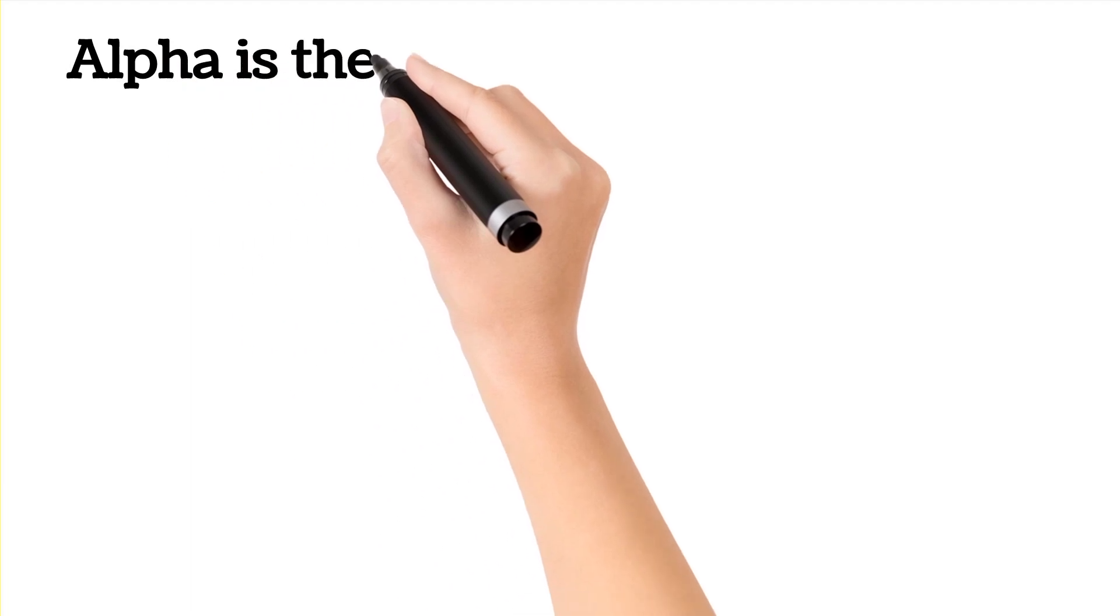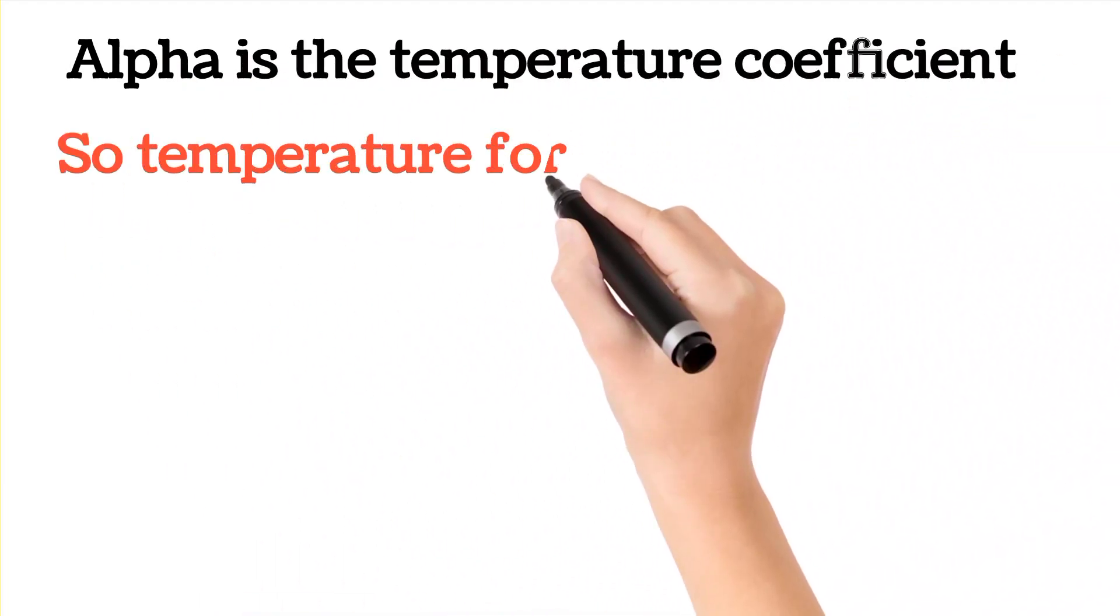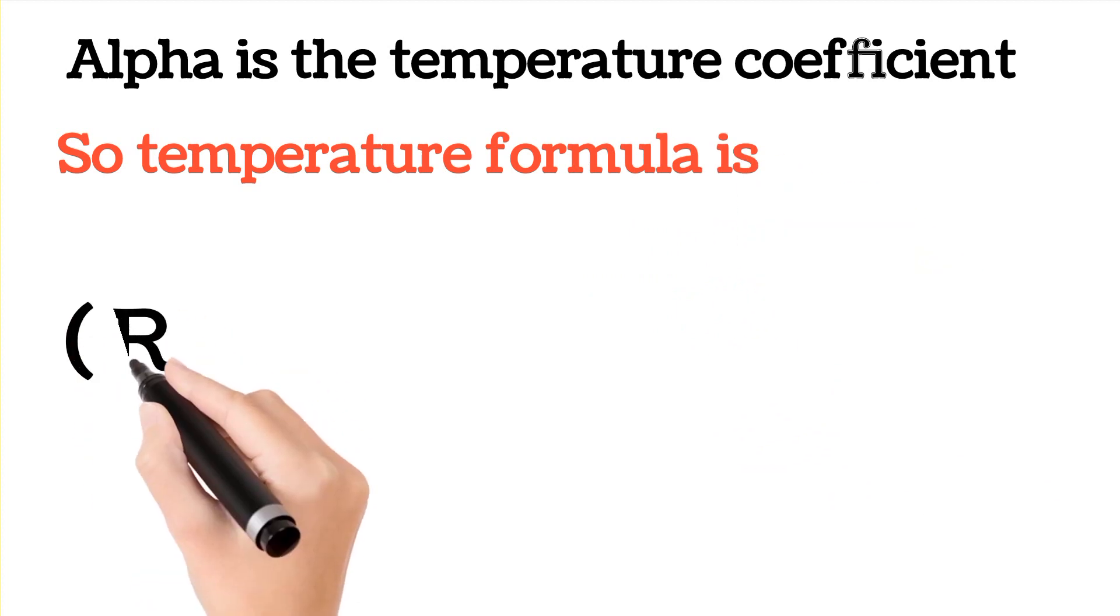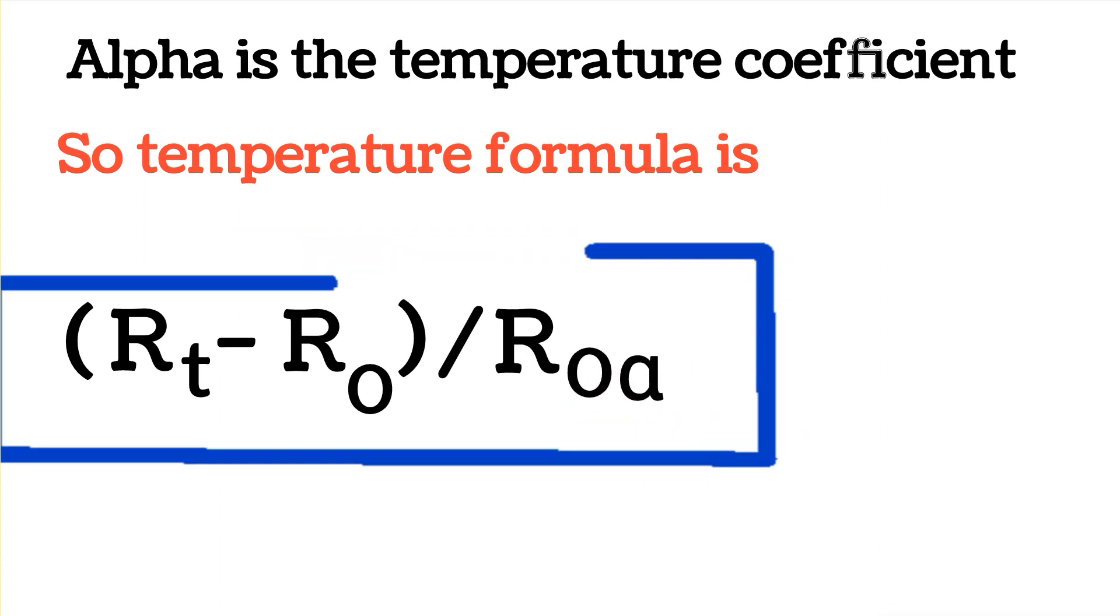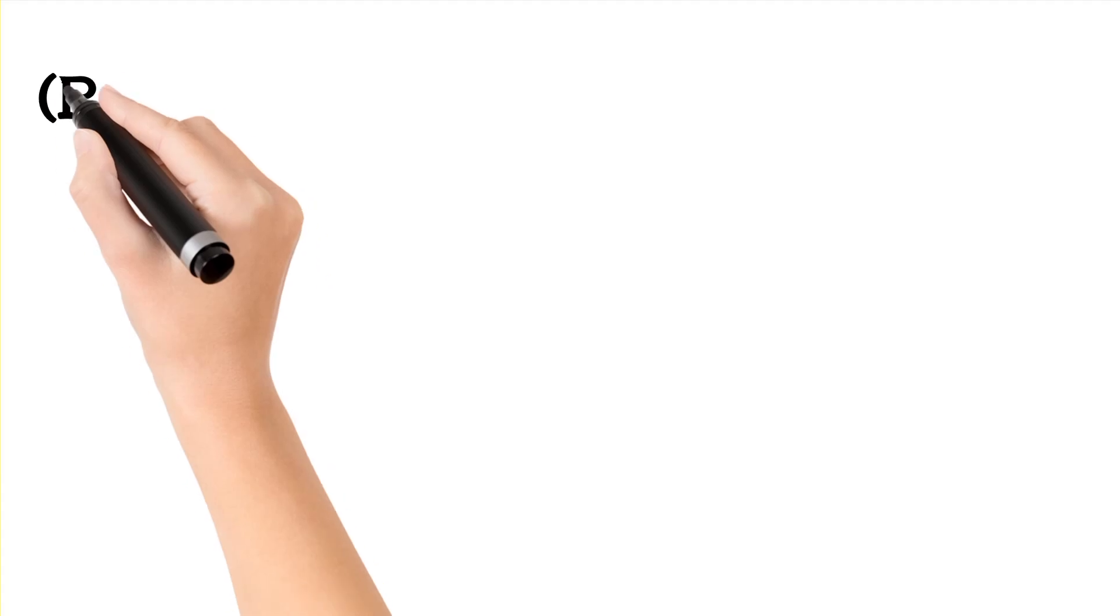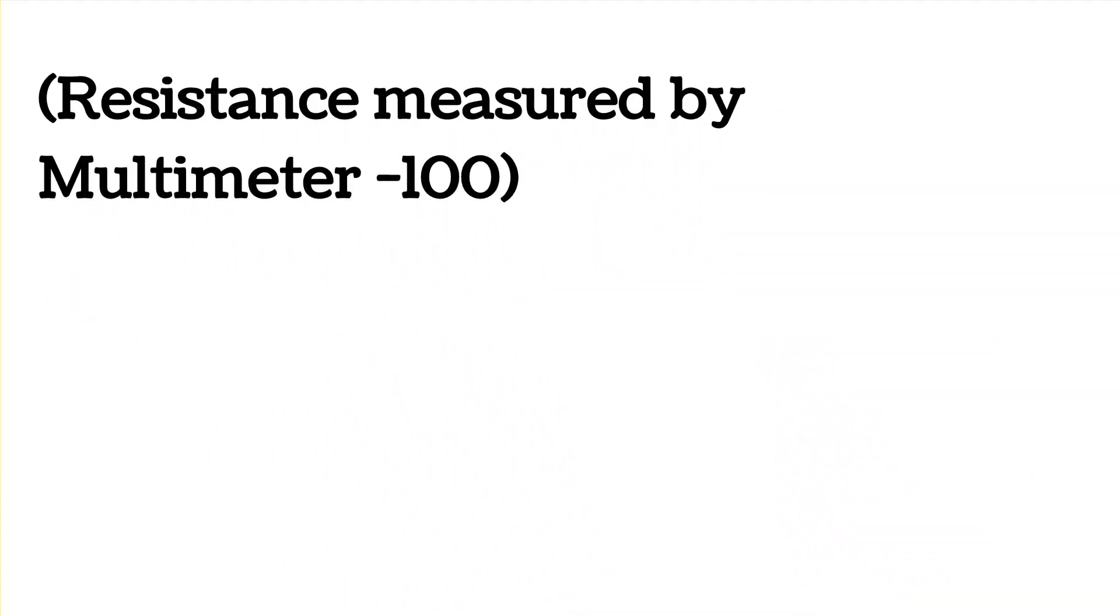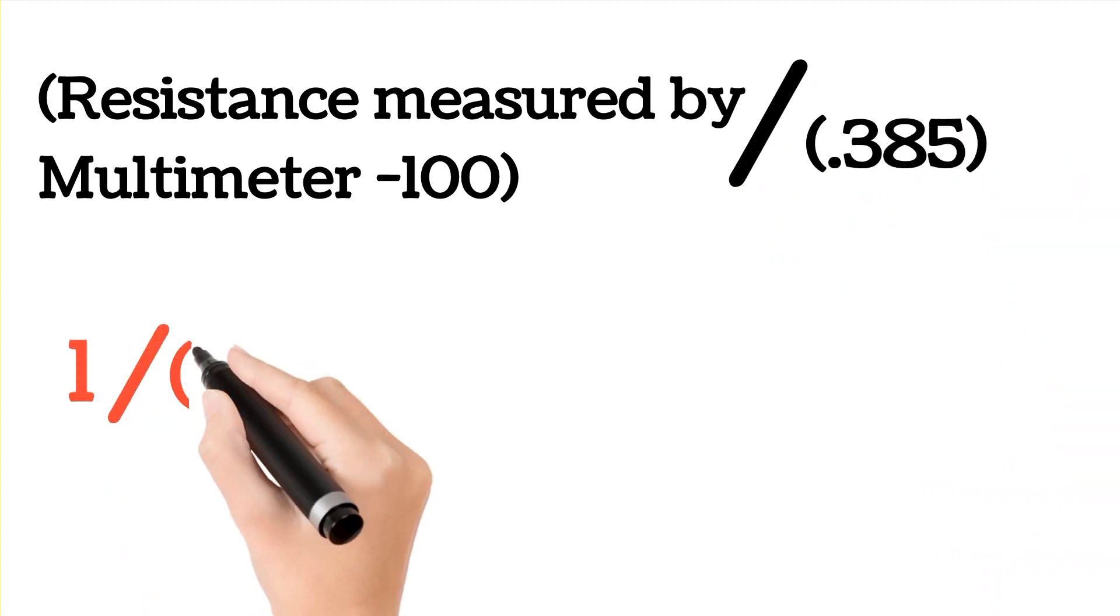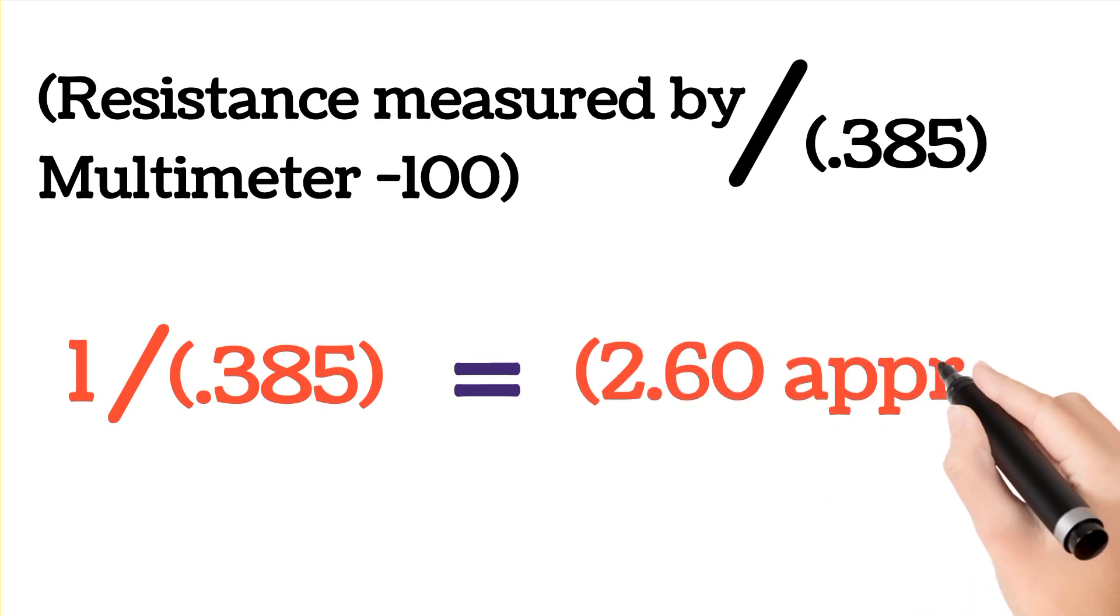Here alpha is the temperature coefficient. So temperature formula is T is equal to RT minus R0 divided by R0 alpha. Now we will explain this formula in an easy way. So the formula for temperature is resistance measured by multimeter minus 100 divided by 0.385. We know that 1 divided by 0.385 is equal to 2.60 approximately.